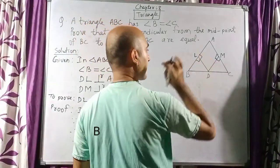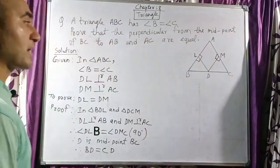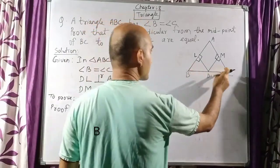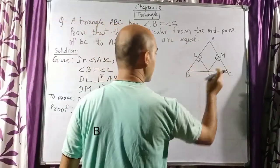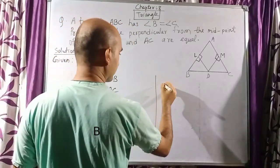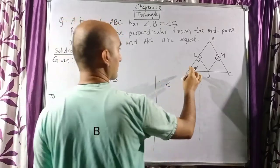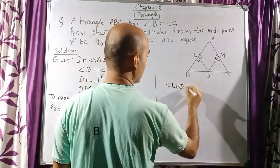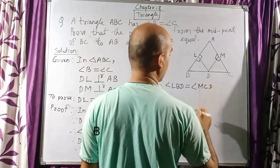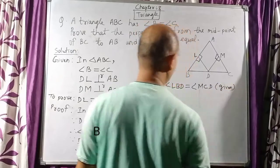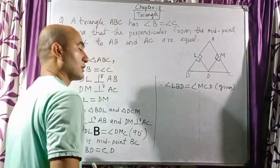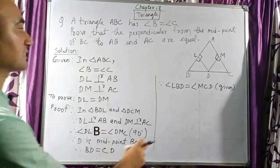We have proved one angle equal and one side equal. The third condition is angle B equals angle C, which is already given in the question. So angle LBD is equal to angle MCD. That gives us the three required conditions for congruency.